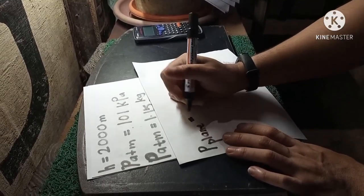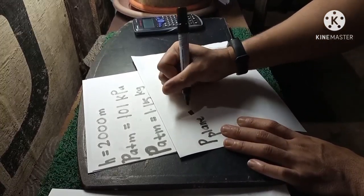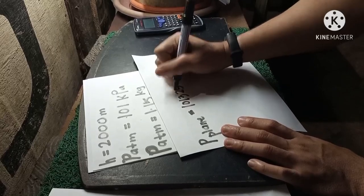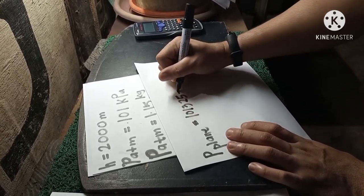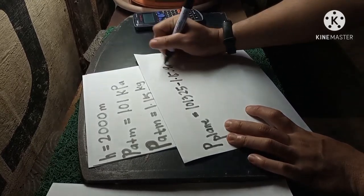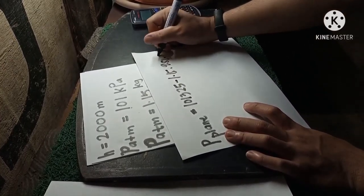We are given the following information: H equals 2000 meters, P atm is equal to 101 kPa, and rho is equal to 1.15 kilograms per cubic meter.